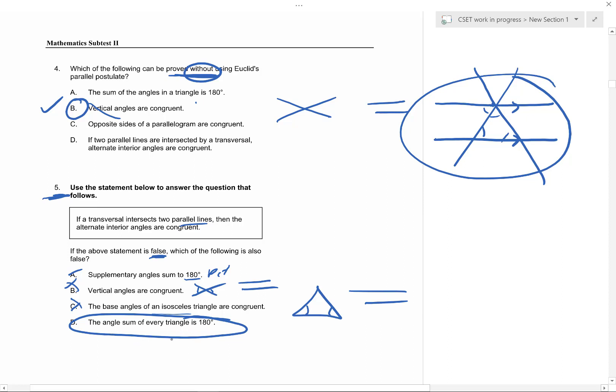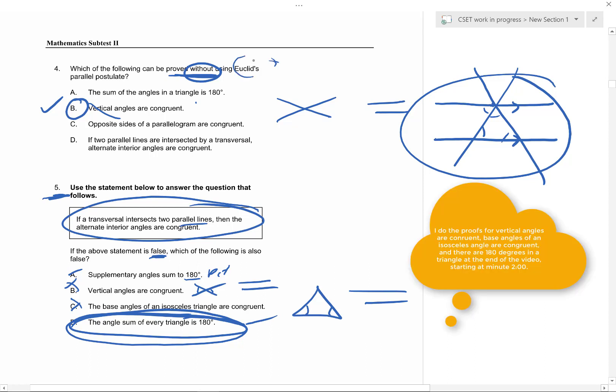So if this statement were false, then you wouldn't be able to prove that statement, and that's all they're going for. I'll link you to some videos with the proof of this and a neat thing about Euclidean geometry and stuff that makes these problems much more interesting. These are pretty boring, but I guess that's okay.